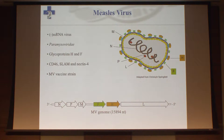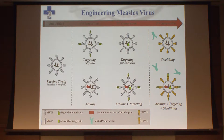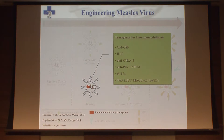Measles virus is a small negative-stranded RNA virus, and all of our work is based on the measles virus vaccine strain, which has an excellent safety profile and has been used for vaccination of children for decades. We modified this virus in many different ways — working on targeting at the entry and post-entry level using microRNA techniques, antibodies, and small ligands displayed on the surface — but today I will focus on our immunomodulatory approaches: cytokines, checkpoint antibodies, BiTEs, and tumor-associated antigens encoded on the virus genome.